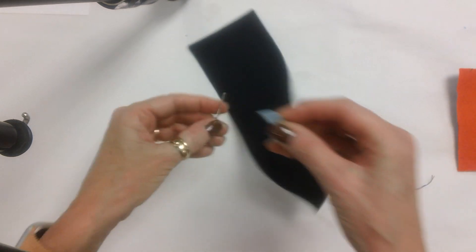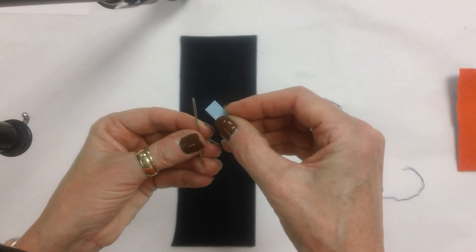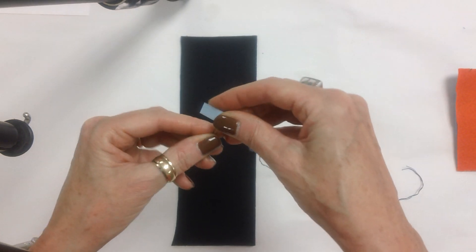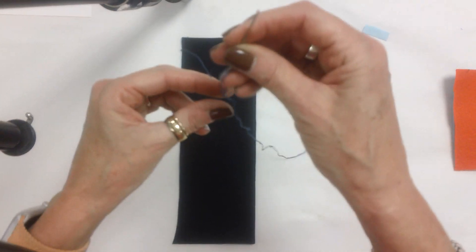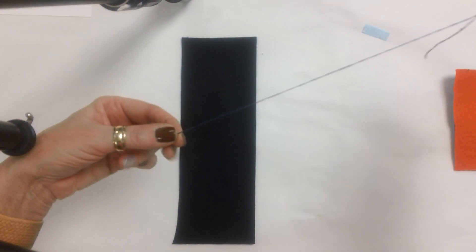You're going to take your needle, stick the taco in the eye of the needle, pull it through and voila, your thread is done.